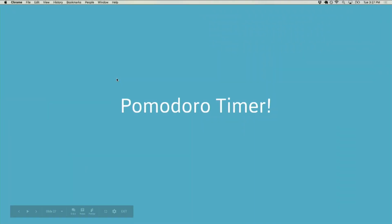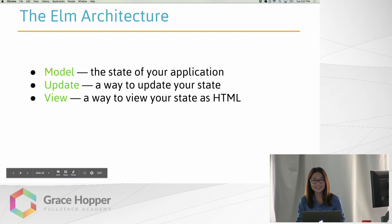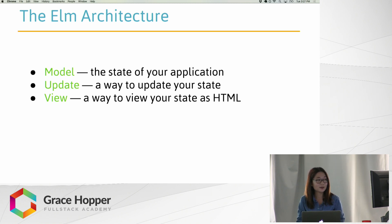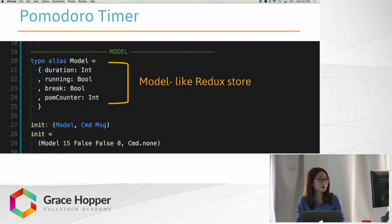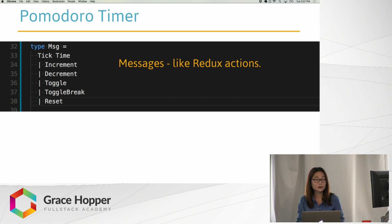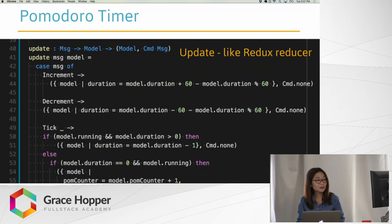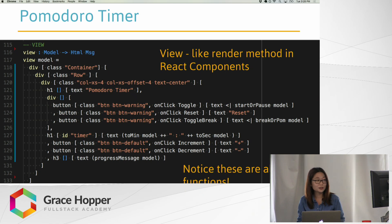This is all possible thanks to the Elm architecture, which describes the format of every program we'll write in Elm. The model describes the state of our application, update is a way to update our state, and view is a way to view our state as HTML. This actually inspired the creators of Redux. Going through the code for this timer, we can see the model — which looks very much like a Redux store — with the duration in seconds, whether it's running, and how many cycles have been completed. We have messages, which are like Redux actions, and update, which is very much like the Redux reducer and follows a similar switch statement format. Depending on the message type and payload, it will update our state. And we have view, which is similar to the render method in React components — these are all Elm functions, not HTML, but they give us a very functional approach towards rendering and defining HTML elements.